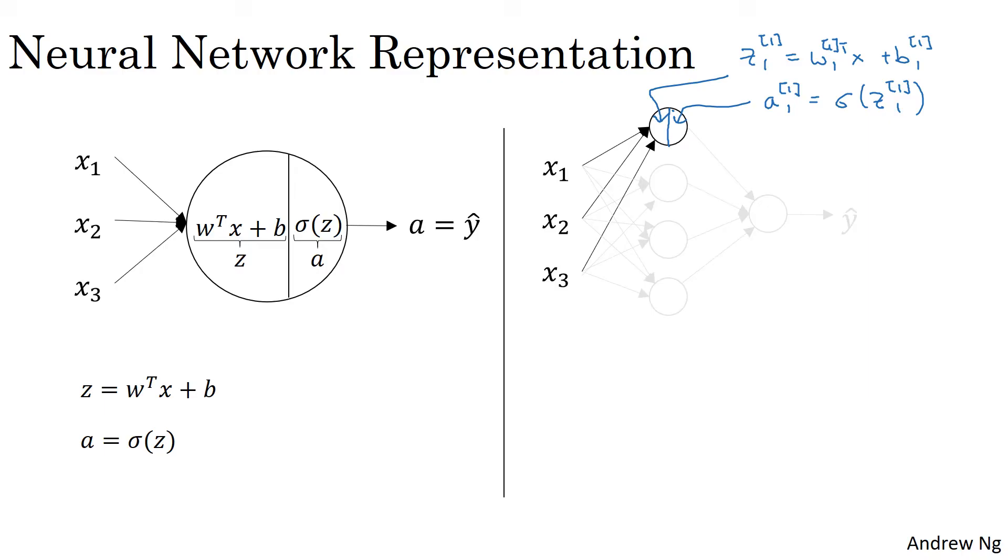So for both z and a, the notational convention is that a, l, i, the l here in superscript square brackets refers to the layer number, and the i subscript here refers to the node in that layer. So the node we've been looking at is layer one, that is the hidden layer node one. So that's why the superscript and subscripts were both 11. So that little circle, that first node in the neural network represents carrying out these two steps of computation.